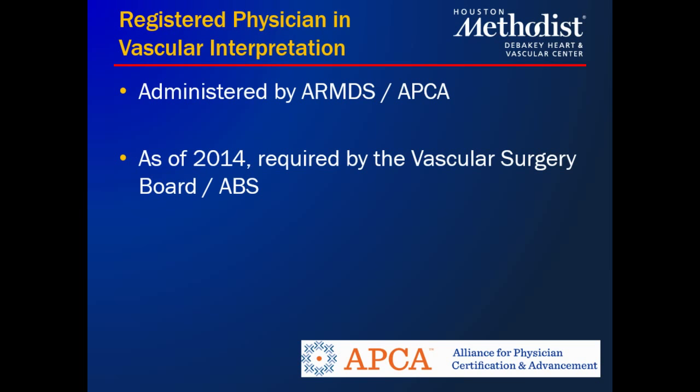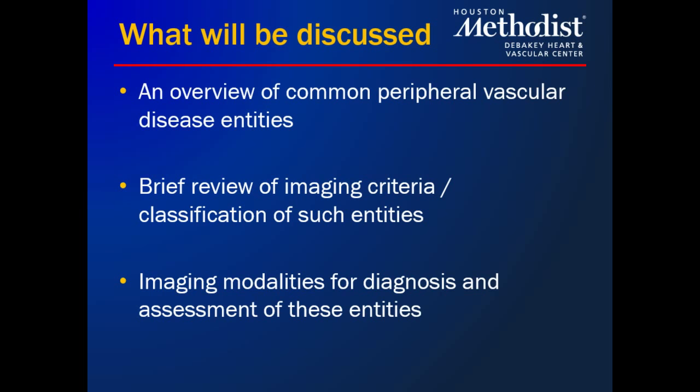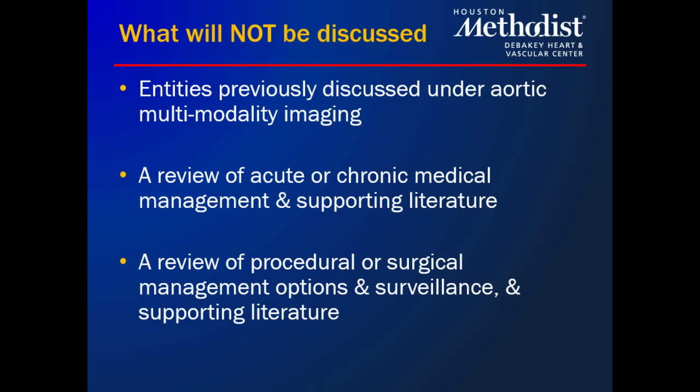Things I'll be covering in this lecture include common peripheral vascular disease entities and associated anatomy, a brief review of imaging criteria and classification, and imaging diagnosis and assessment of these entities. I won't cover aortic diseases from the multimodality imaging lecture, acute or chronic medical management, or procedural and surgical management — those are covered well by the vascular surgeons.